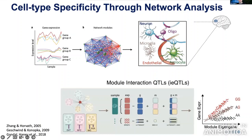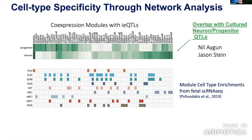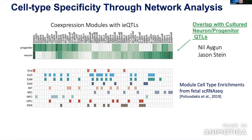We built coexpression modules and examined the interaction between QTLs and module eigen-gene levels representing cell type-specific gene expression patterns. We identified dozens of coexpression modules with significant interaction QTLs enriched for cell type-specific markers from fetal single-cell RNA-seq. These replicate with cultured neuron and progenitor cell QTL lines, providing orthogonal experimental replication of cell-type specificity.